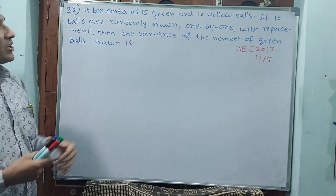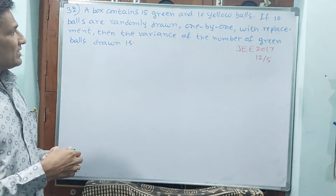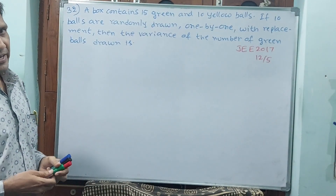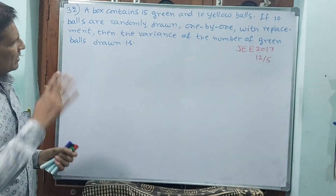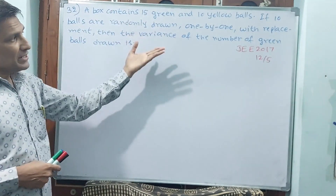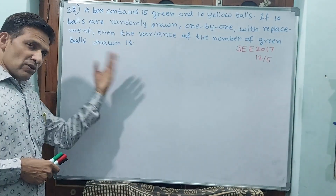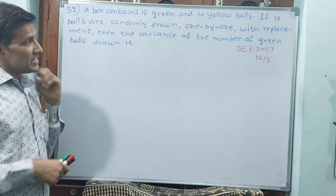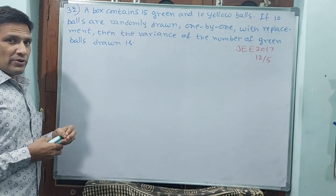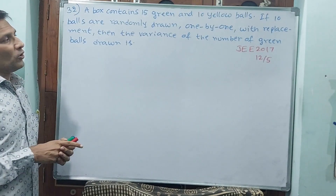If 10 balls are drawn, that means n is 10. The balls are drawn one by one and it is with replacement — first you have drawn and again you have replaced. That means every time the probability is going to be the same. That is why you have to take the full rate only.